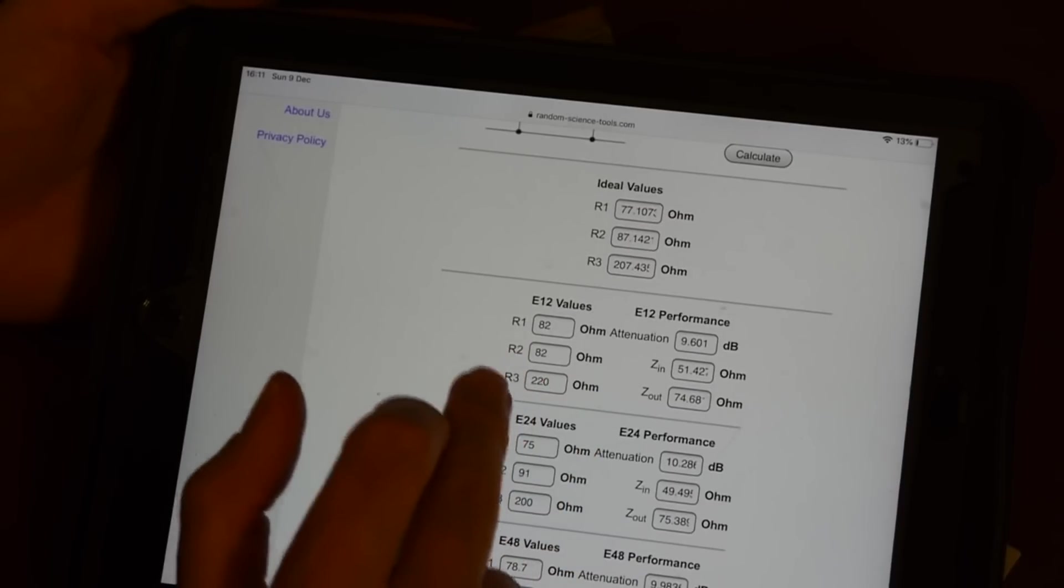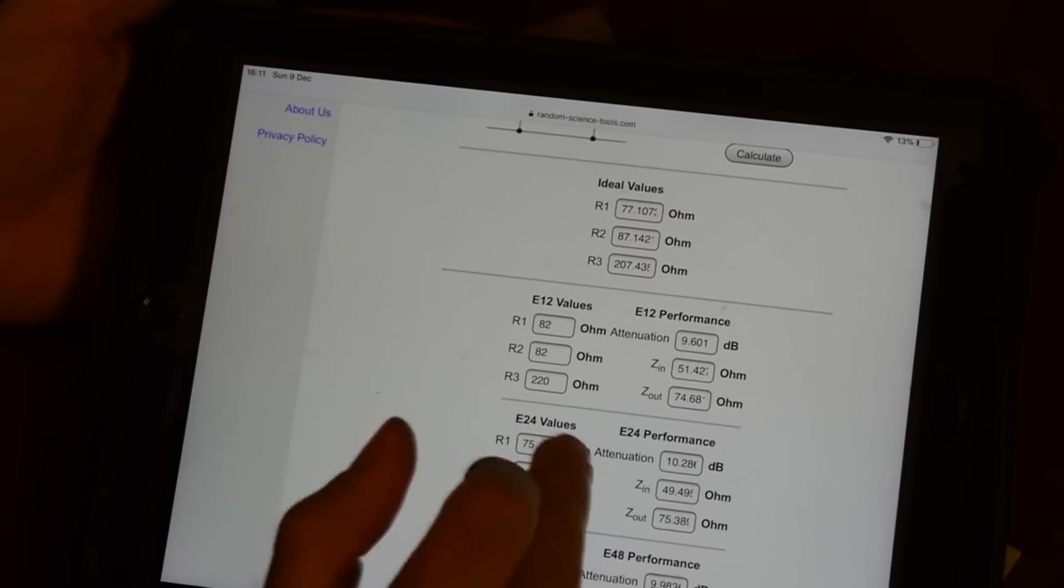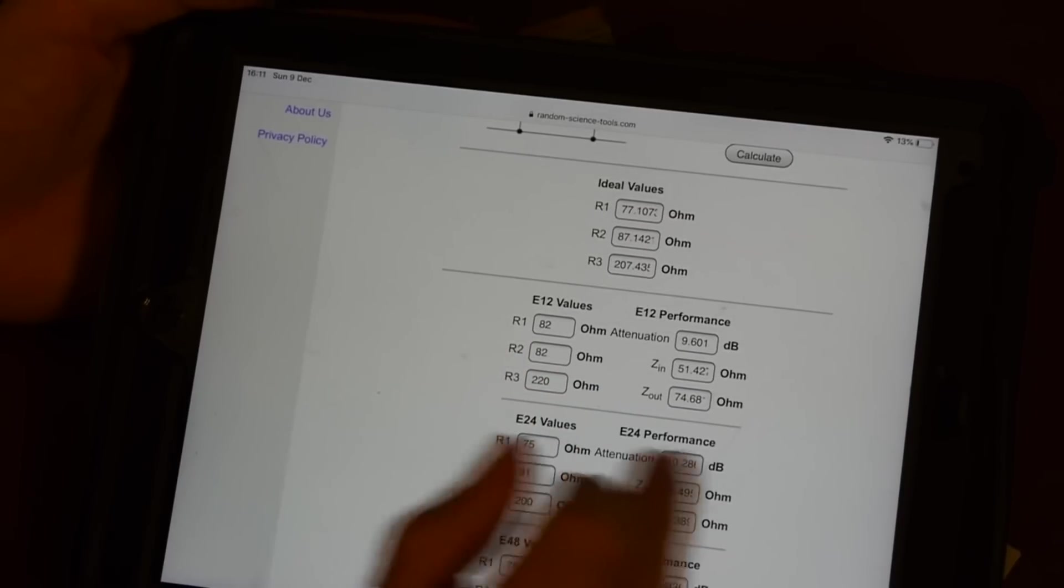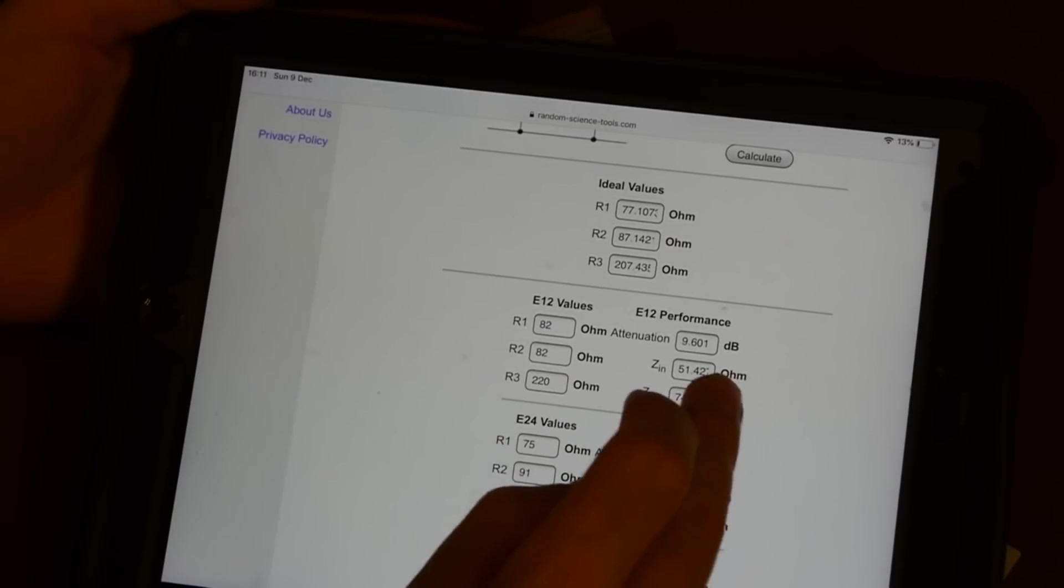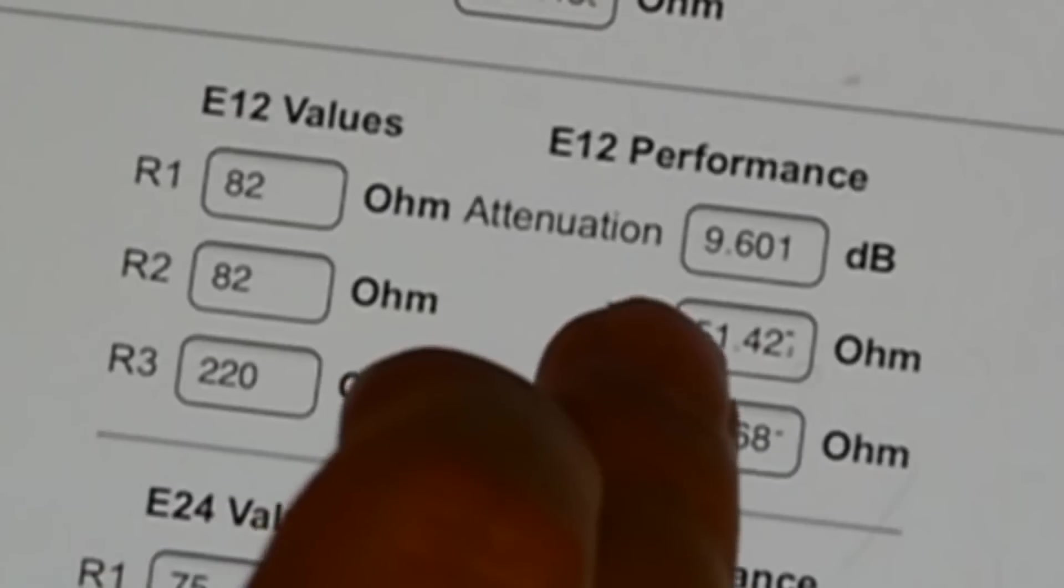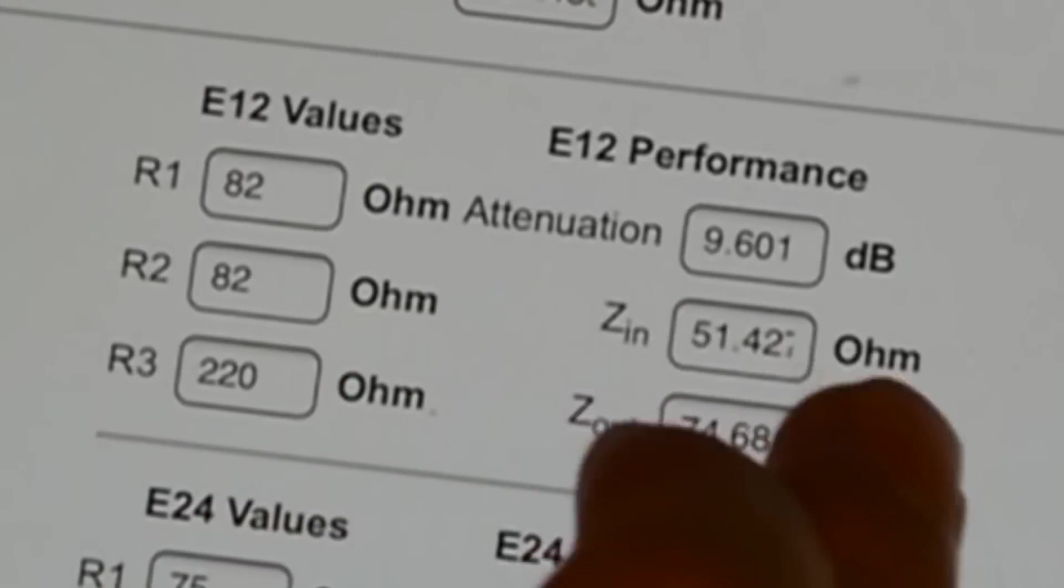What I want to do is use the next nearest values and it's prompting me here to use 82 ohms, 82 ohms and 220 ohms. And of course that's what I've bought. It shows you here the error that we're going to get. For those values we're not going to get a 10 dB attenuator. We're going to get 9.601.